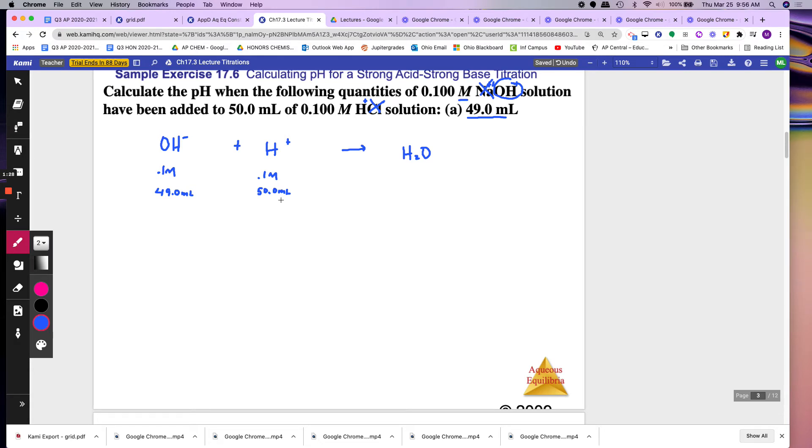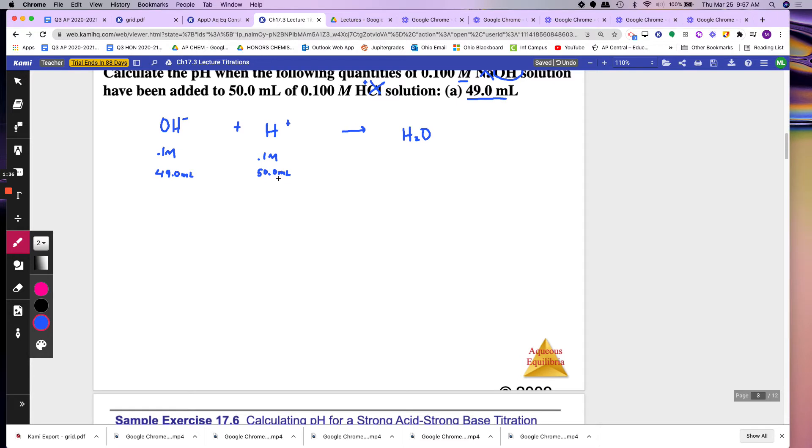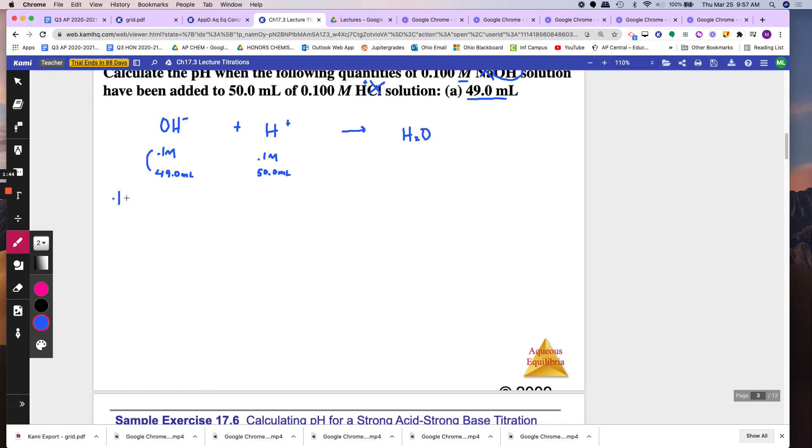But here, which one do you have more of? Well, it looks like you have more H+, which means this will be acidic. Then to get that pH, just log it, log the H+. So first you have to know how many moles you have, so you multiply these two. 0.1 molar means moles over liters, times, this is, you move it over three times, 0.049 liters. That will give you 0.00490 moles of OH-, I'm sorry.